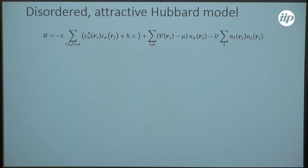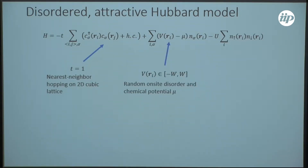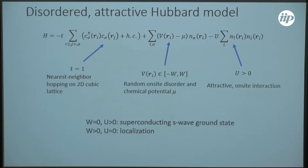The model we want to look at is the disordered attractive Hubbard model. We have a hopping term — nearest neighbor hopping on a 2D cubic lattice. Then we have a random potential with disorder strength W, a box distribution with W, and we have an on-site attractive interaction. This is a good model to look at the superconductor-insulator transition, as for W equals zero and U larger than zero we have a superconducting S-wave ground state, while for W larger than zero and U equal to zero we have the standard Anderson model.